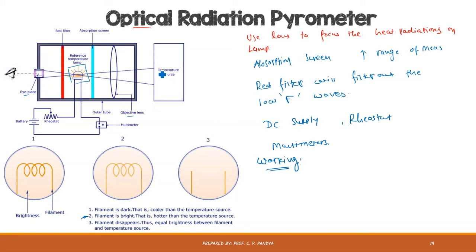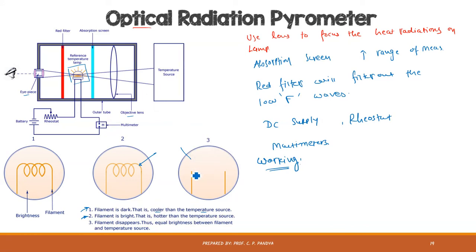If the temperature of the rays coming from the source is higher than the temperature of the lamp, you can see that the filament appears darker than the adjacent area — this satisfies the first condition where the filament is dark, meaning it is cooler than the temperature source. The operator will then adjust the rheostat so that the current through the filament is adjusted accordingly, until the temperature of the filament matches the temperature of the light coming from the source.